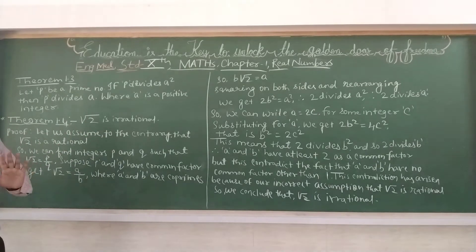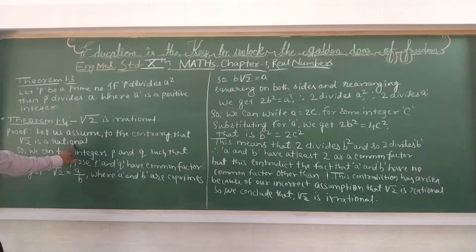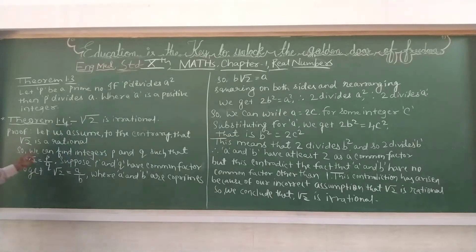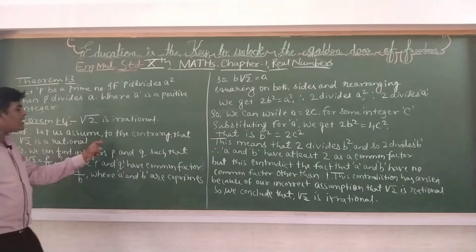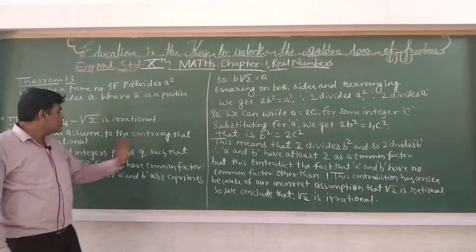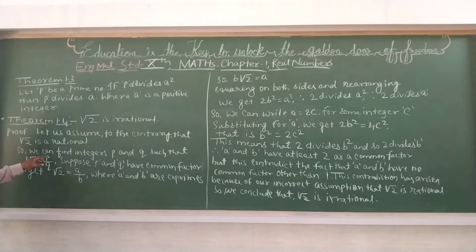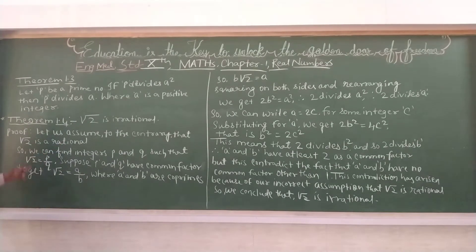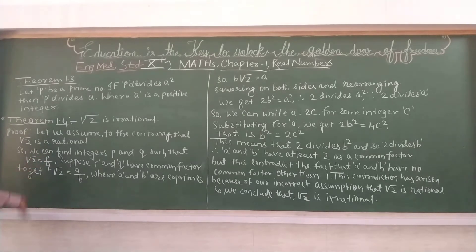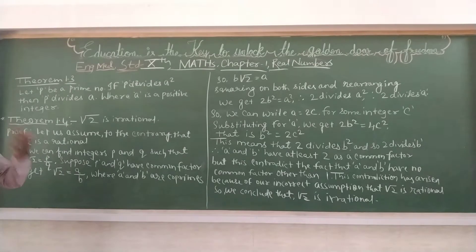Maana ki root 2 is a rational number. Rational number ka form kya hota hai? P upon Q form hoti hai. So we can find integers P and Q such that root 2 is equal to P upon Q. Humne root 2 ko P upon Q form mein liya hai, matlab rational number liya hai.